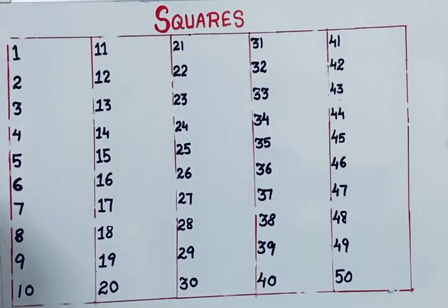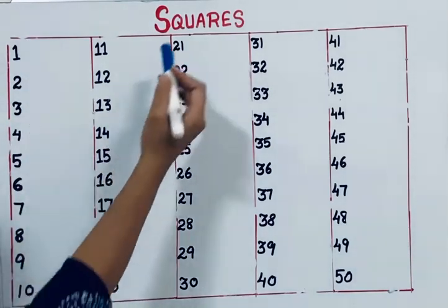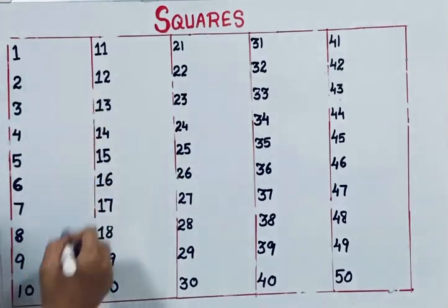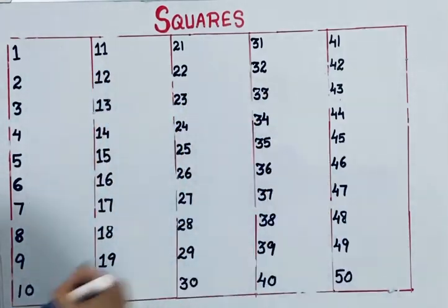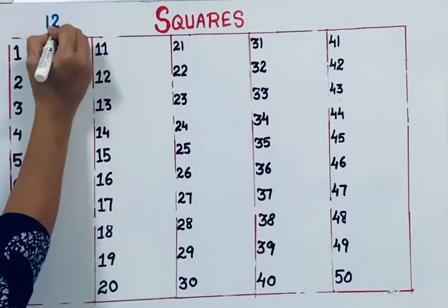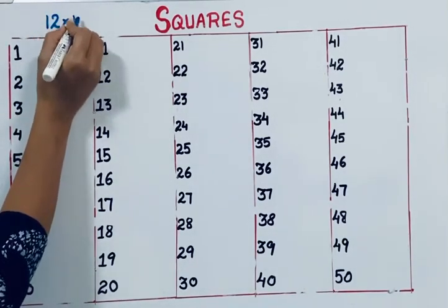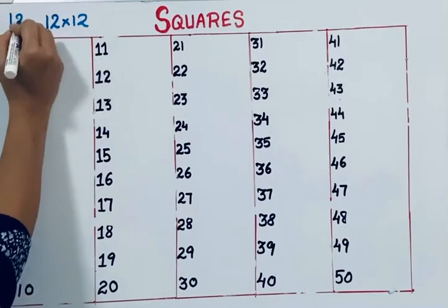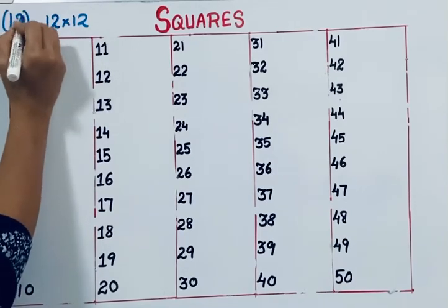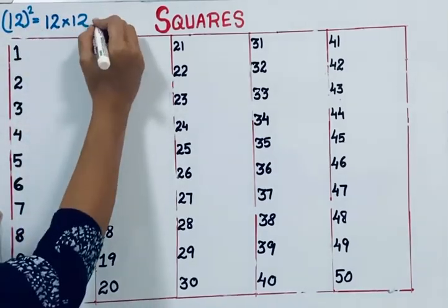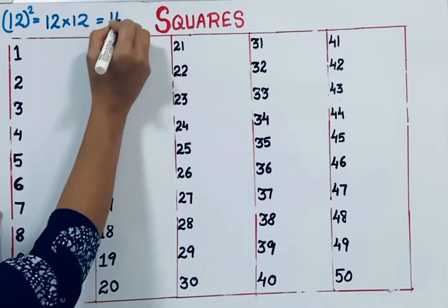Hi, here I am going to show you the squares of numbers 1 to 50. A square is when you multiply a number by itself. For example, to find 12 squared, we multiply 12 by 12, which gives 144.